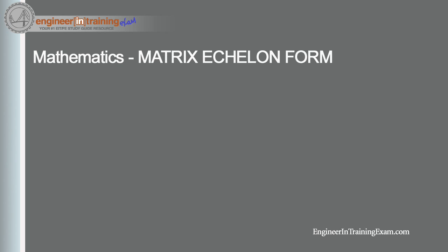A matrix A is considered to be in row echelon form, also notated as REF. A matrix is in row echelon form when it adheres to the following conditions: number one, the first non-zero element in each row, called the leading entry, is 1; second, each leading entry is in a column to the right of the leading entry in the previous row; and third, rows with all zero elements, if any, are below rows having a non-zero element.